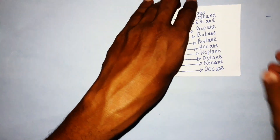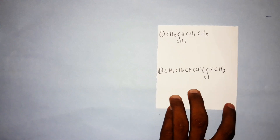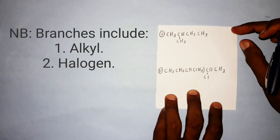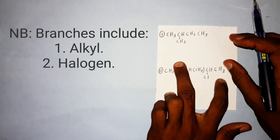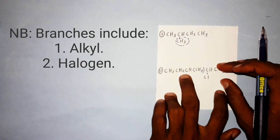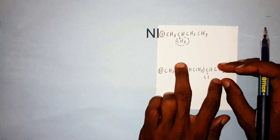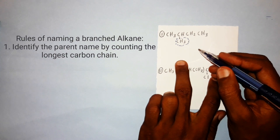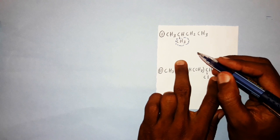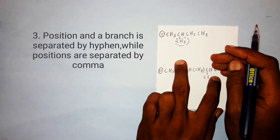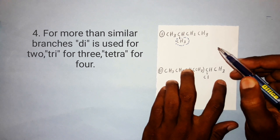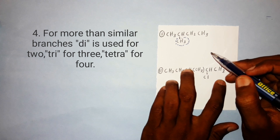Next, we will go to how to name a branched alkane. A branched alkane is an alkane that has a branch — either an alkyl group or a halogen group. The first guideline is to identify the parent name by counting the longest continuous carbon chain, then number the chain from the end nearest to the branch. A number and a name are separated by a hyphen, while positions are separated by a comma. For similar branches, use di- (×2), tri- (×3), or tetra- (×4).